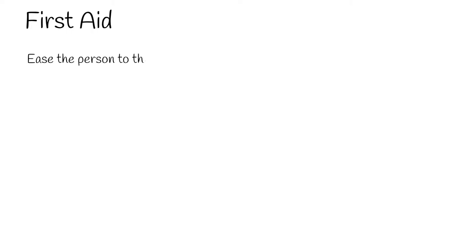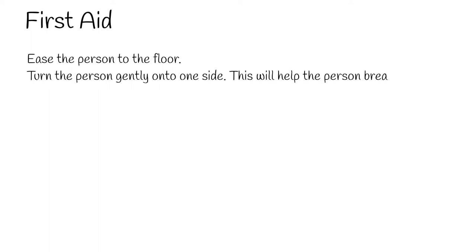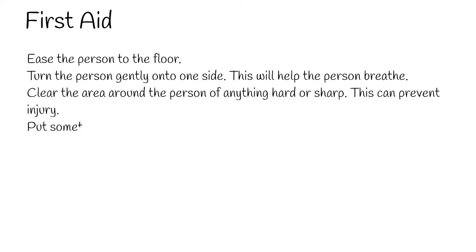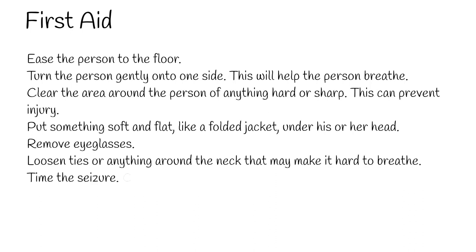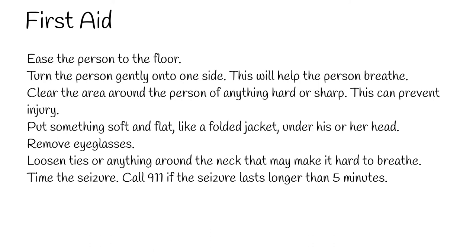When most people think of a seizure, they think of a generalized tonic-clonic seizure, also called a grand mal seizure, in which the person may cry out, fall, shake or jerk, and become unaware of their surroundings. To help someone having this type of seizure: ease the person to the floor and turn them gently onto one side to help them breathe. Clear the area of anything hard or sharp, put something soft and flat like a folded jacket under their head, remove eyeglasses, and loosen ties or anything around the neck that may make it hard to breathe. Time the seizure and call 911 if it lasts longer than 5 minutes.